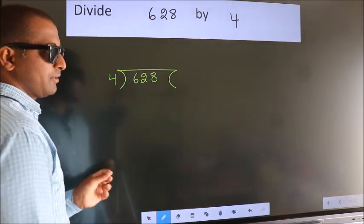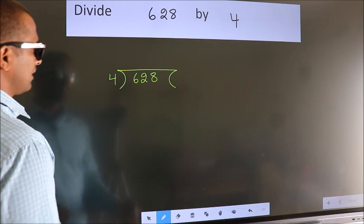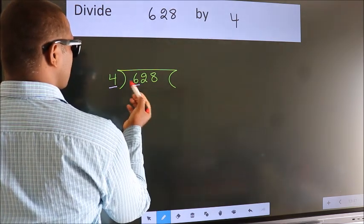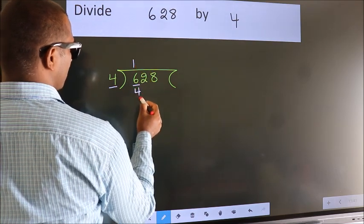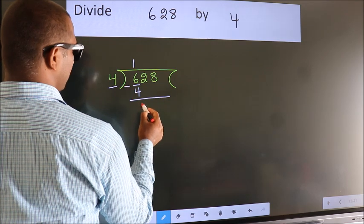This is your step 1. Next, here we have 6, here 4. A number close to 6 in 4 table is 4 once 4. Now, we should subtract. We get 2.